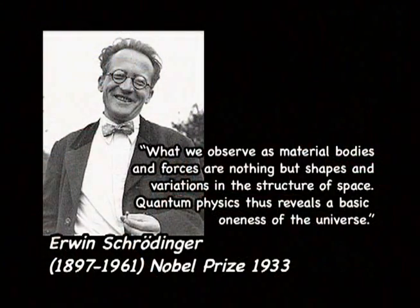In quantum mechanics there is a famous equation called the Schrödinger wave equation. At that time, this idea that particles had a waviness to them was becoming dominant. Einstein initially subscribed to it very much. And so Schrödinger came along and said, well, I can write down an equation that describes the behavior of an electron wave, for example.